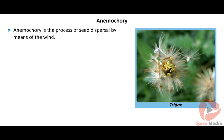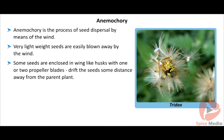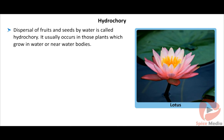Anemochory is the process of seed dispersal by means of wind. Very lightweight seeds are easily blown away by the wind. Some seeds are enclosed in wing-like husks with one or two propeller blades or fluffy coverings that help them drift some distance from the parent plant. Examples include Calotropis (called erukam in Tamil) and Moringa, commonly known as drumsticks. Fruits of Tridax also disperse by wind with the help of hair-like persistent calyx known as pappus, which acts like a parachute.